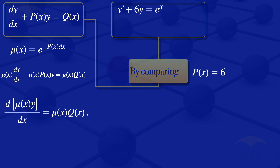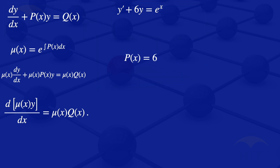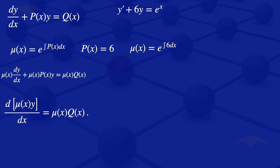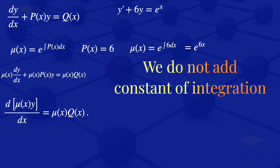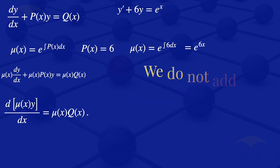With P(x) = 6, we can evaluate the integrating factor μ(x). We have μ(x) = e^(∫6 dx). The integral of 6 with respect to x gives us 6x, so μ(x) = e^(6x). As noted, we do not add the constant of integration when evaluating the integrating factor.